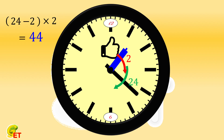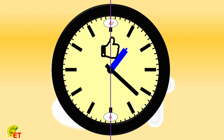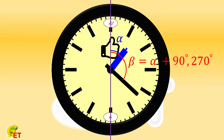In the second way, we take 12 o'clock as the starting point. The angle at which the hour hand rotates is alpha, and the angle at which the minute hand rotates is beta. If the two hands are perpendicular, beta equals alpha plus 90 degrees, or plus 270 degrees. We also need to use another condition: the 360 degrees on a dial is evenly divided into 12 large scales, so the difference between every two scales is 30 degrees.